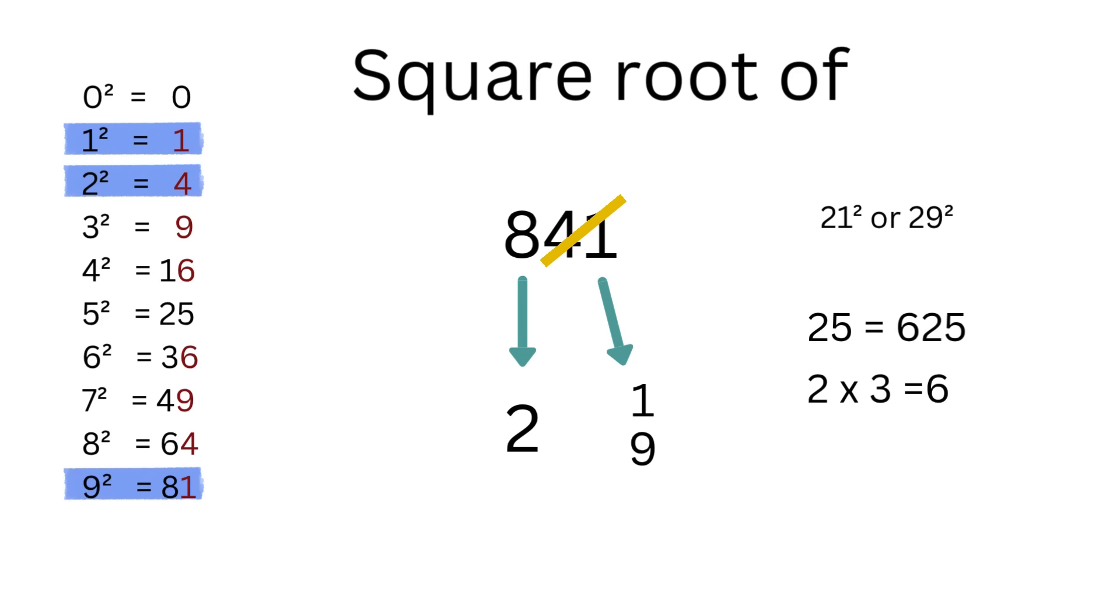Notice 625 is smaller than 841. So 25 squared is too little. So it must actually be the case that 841 is equal to 29 squared. Thus we take the larger option of 9. So the square root of 841 is equal to 29.